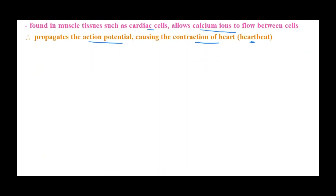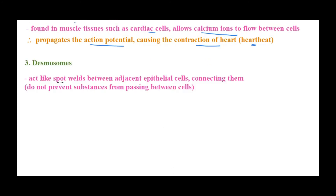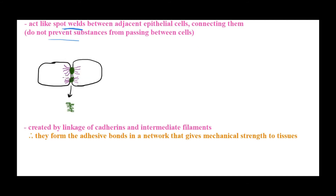Because of calcium ion flow through gap junctions, propagation of action potential takes place, causing the contraction of the heart and giving us the heartbeat. The next and last type of intercellular junction is desmosomes. Desmosomes act more like spot welds between two cells — they connect two cells but are not as tight as tight junctions, so they do not prevent substances from moving between cells. Structurally, they are formed by linkage between the cadherin molecules of two adjacent epithelial cells.